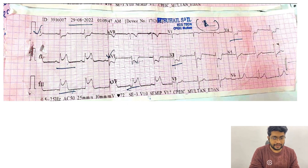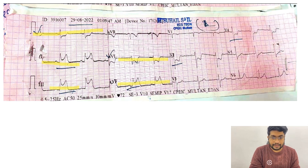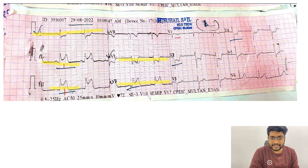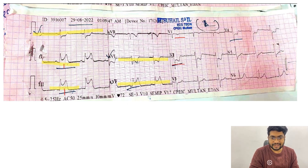In this ECG, lead 1 shows ST segment depression, lead AVL shows ST segment depression, but lead 2, lead 3, and lead AVF show ST segment elevation. Looking at lead 3, it has more ST segment elevation compared to lead 2 — our first criteria of RV infarct is fulfilled. Our next criteria: V1 should be isoelectric or elevated — it is isoelectric, so the second criteria is fulfilled. The third criteria was that V2 should have ST segment depression.